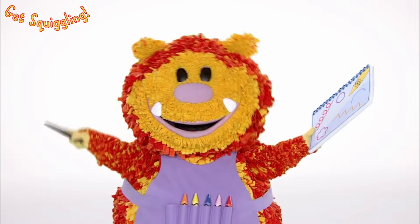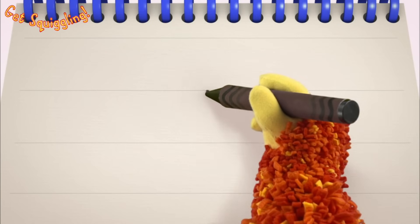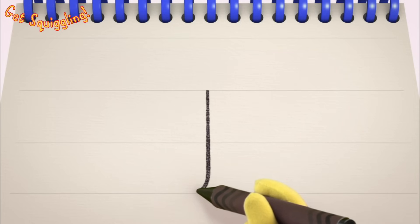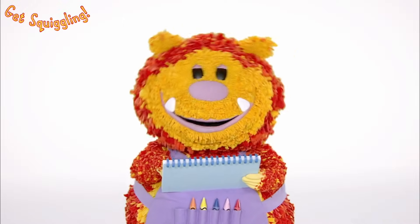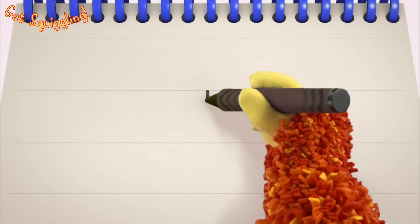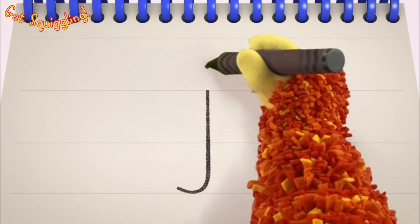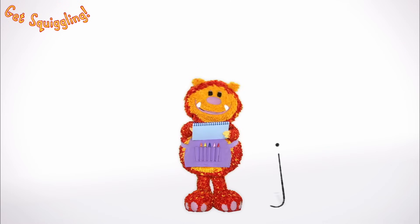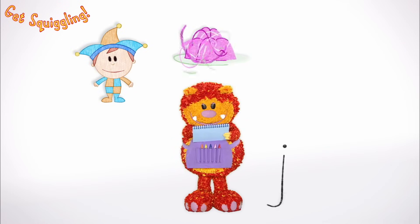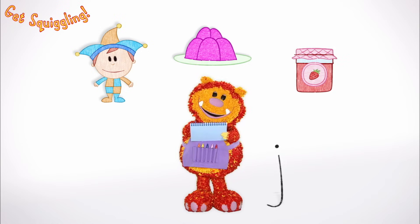Have you got your squiggle pads and squiggle sticks ready? Let's get squiggling! Holding your squiggle stick like this, move it down and round and dot — the letter J! Let's squiggle it again: go down and round and dot — the letter J! Shall we squiggle some things that start with the letter J? A jester, jelly and jam — they all begin with the letter J!